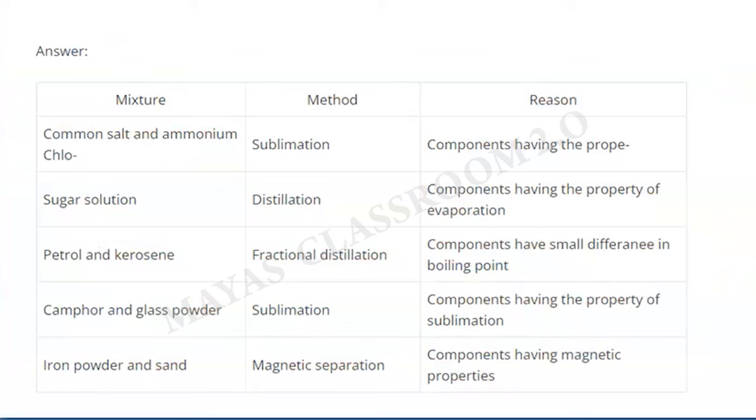Iron powder and sand can be separated using magnetic separation, based on their magnetic properties.